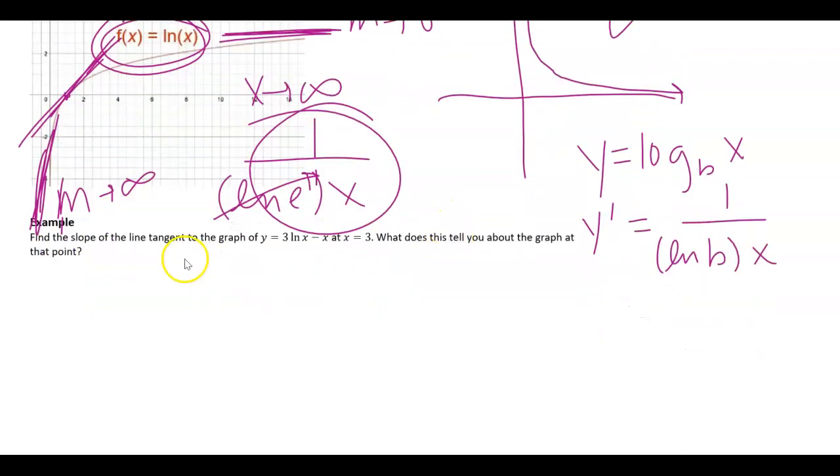All right, we just have one example here. Find the slope of the tangent line to this graph at x equals 3. And what does this tell you about the graph at that point?